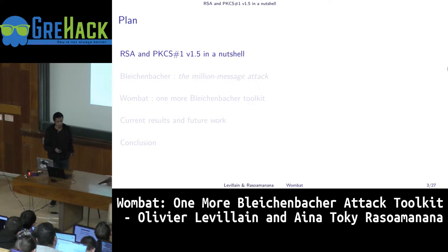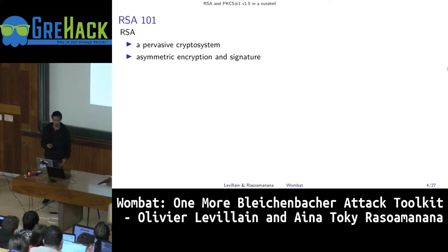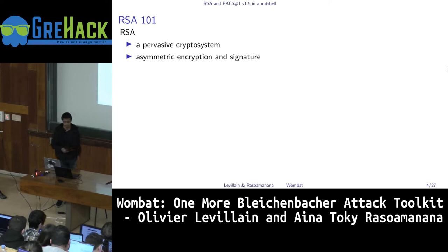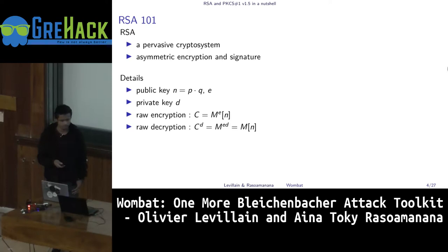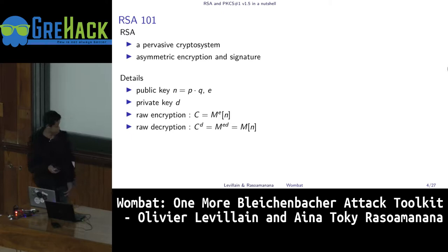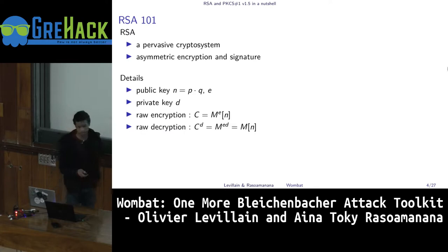The Bleichenbacher attack is an attack against the PKCS#1 version 1.5 scheme. As you all know, RSA is an asymmetric encryption and signature scheme, widely used today. In this talk, we note N and E the RSA public key and D the private key. For encryption, we need to use the public key N and E to compute the cipher text corresponding to the message M. For this, we compute M to the power E modulo N. And for decryption, we need to use the corresponding formula.